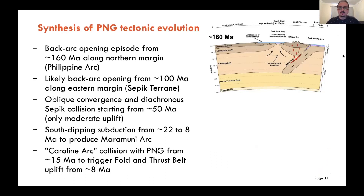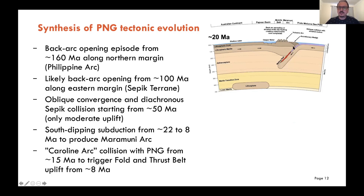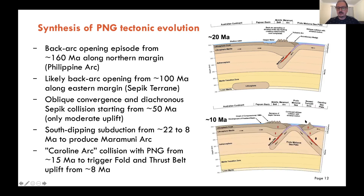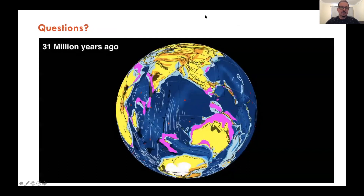Just a quick overview — these are actually my sketches that were turned into beautiful works of art by Jeremy Ivonek and the Oil Search team. You can see the back-arc opening, possibly the Philippine archipelago but possibly the Sepic terrain, from 160 Ma. By 50 million years ago there's been the collision of the Sepic terrain and this composite terrain. Then from about 25 million years ago, south-dipping subduction to produce the Maramuni volcanic arc and to consume what we'd call the Proto-Molucca Sea plate, and eventually collision with the Caroline arc — the Adelbert, Finisterre, and Torricelli terrains — in the last 15 million years. That's really all I wanted to showcase on the updates to plate reconstructions over the last few years. Thank you for your attention.